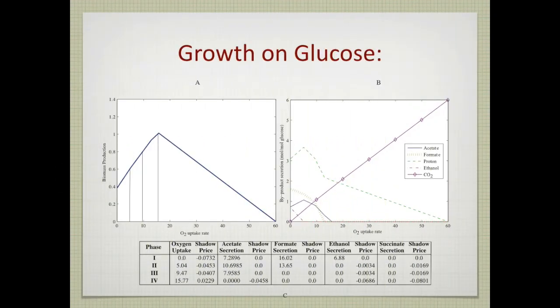Here is the calculation for growth on glucose extended a little further. You see these phases as growth rate increases as a function of oxygen uptake, but then it starts going down as you force-feed oxygen. If you force enough oxygen import, you can eventually drive growth rate to zero. Of course, a cell would never take up more oxygen than it needs, so that phase past the optimum is predicted to be phenotypically unstable—the cell would reduce its oxygen uptake rate to get a higher growth rate.